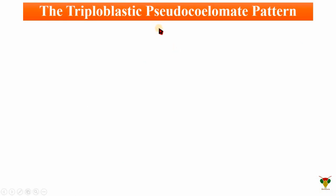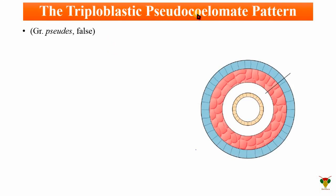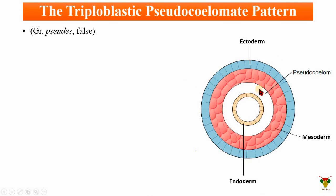Next is the triploblastic pseudocoelomate pattern. Just as we discussed the word meaning of acoelomate, we will also discuss the origin of the word 'pseudocoelomate.' It is taken from the Greek language — 'pseudo' means false — a false coelom. The coelom of pseudocoelomates is not made up of or derived from mesodermal cells; it is not completely derived from the mesodermal cells. In the diagram, the space is made by the splitting of mesoderm and endoderm.